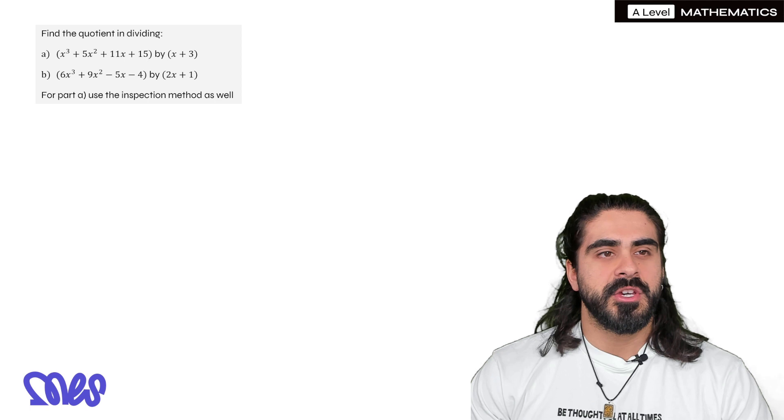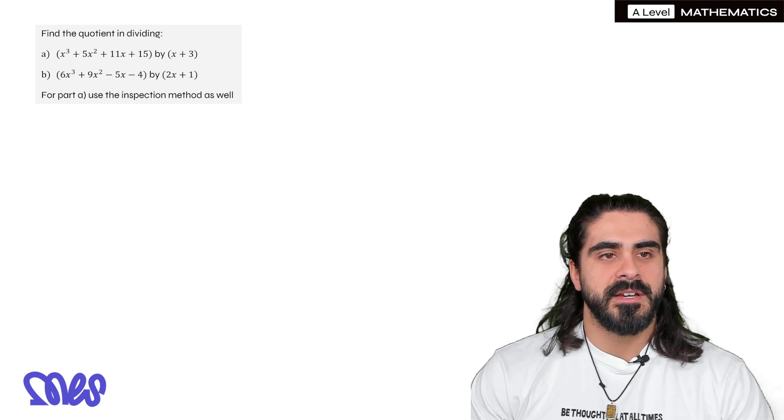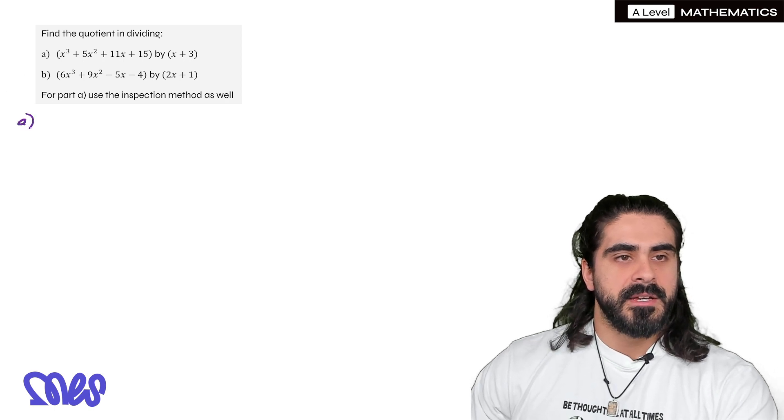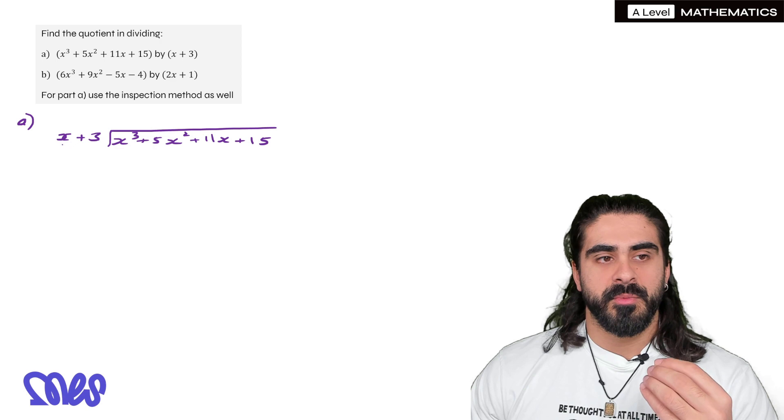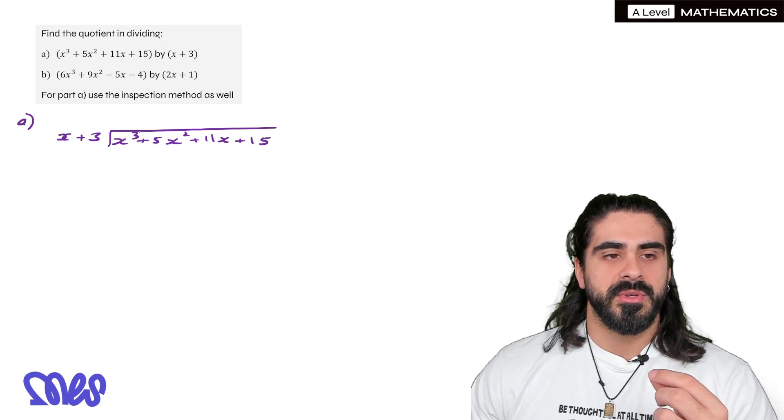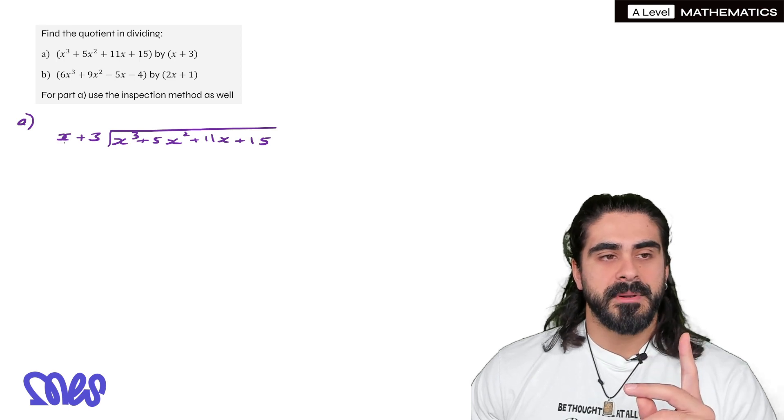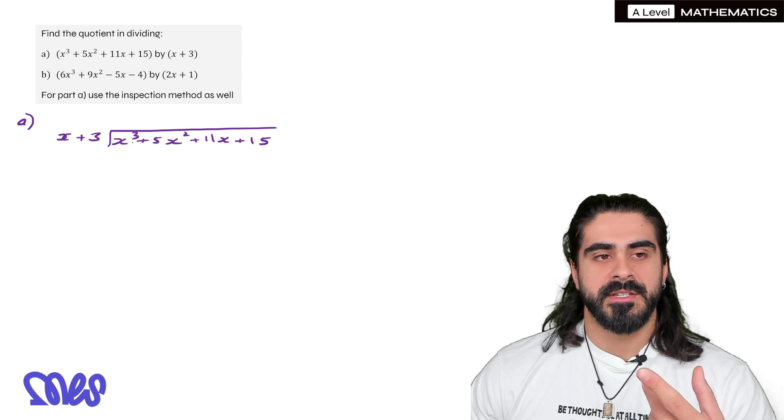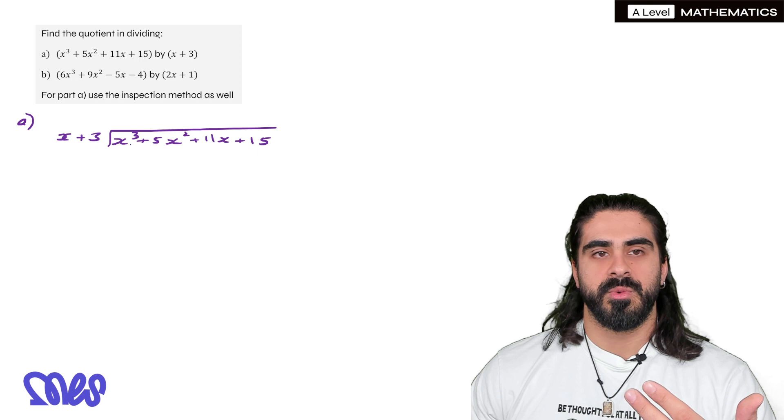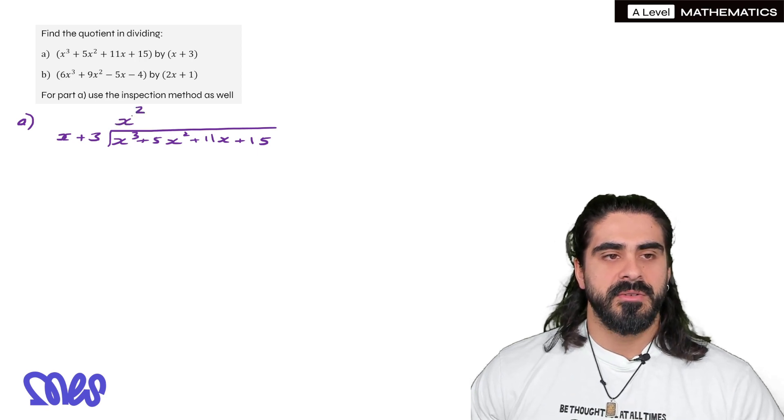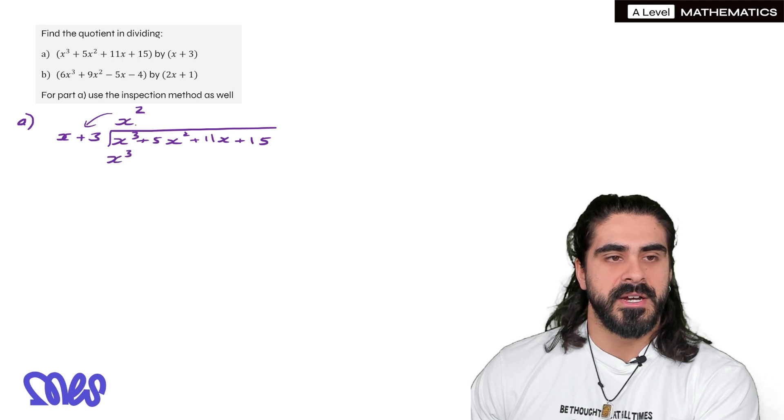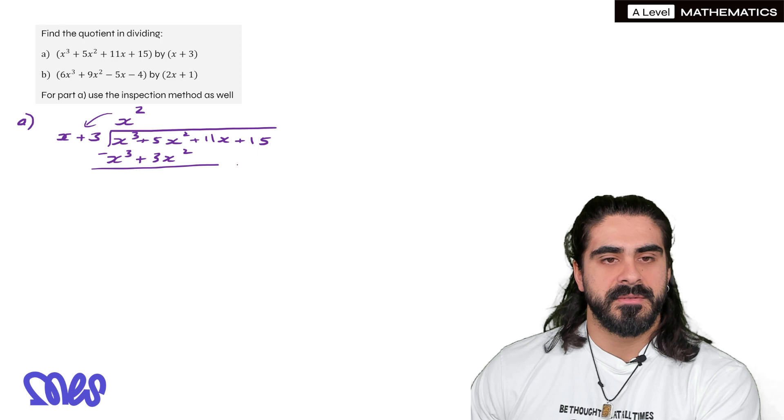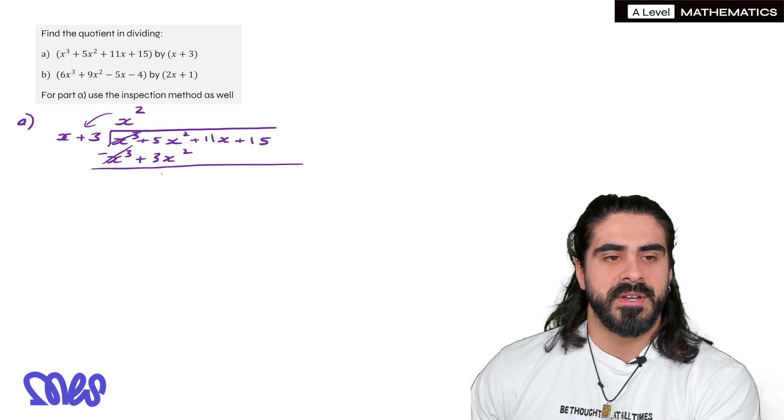So this is what an algebraic division question would look like. Find the quotient in dividing x³ + 5x² + 11x + 15 by x + 3. So we set it up the same. Now when it comes to algebraic division we always look at the leading x term and what you're dividing by. So you say how many x's go into x³. And the way you want to think about it is what do you need to multiply x by to give you x³. That's what we did with the 13. We said what do you have to multiply 13 by to get 18. We said 1. So x times x² gives you x³. And then we do the quotient multiplied by what you're dividing by. We write it underneath. So x² times x is x³. Then we have 3x² and then we subtract. So the x³s cancel. 5x² minus 3x² is 2x². Then the 11x comes down and the 15 comes down as well.